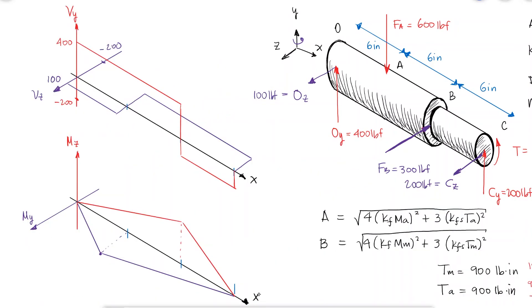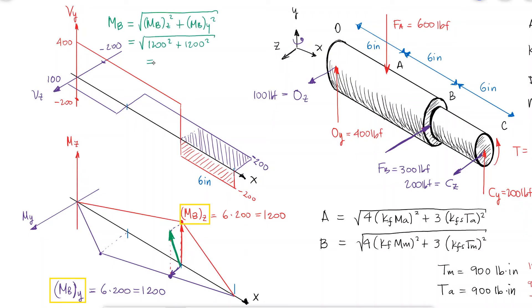The normal stress due to bending will be maximum at the fillet where the stress concentration happens. With the moments about the y-axis and about the z-axis at B, we can find the total moment at B by using those perpendicular values as the components.